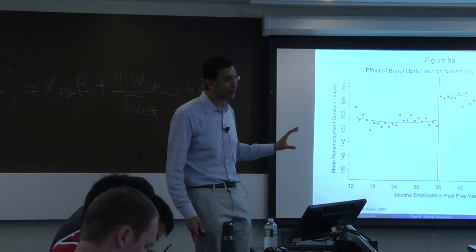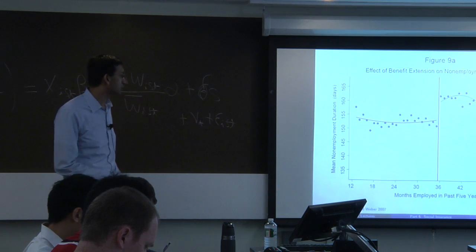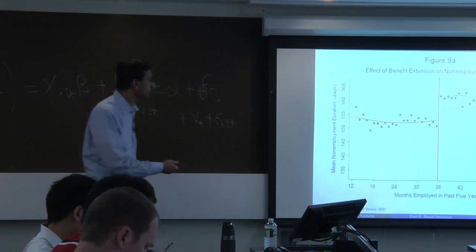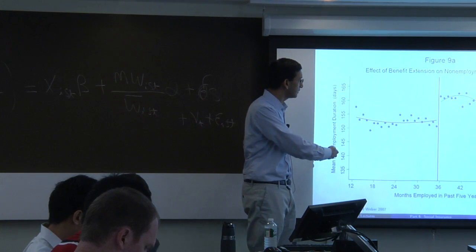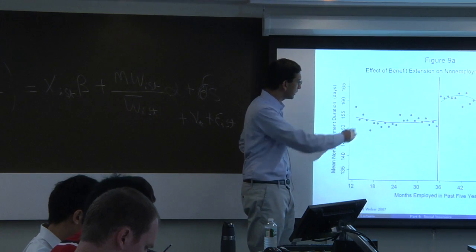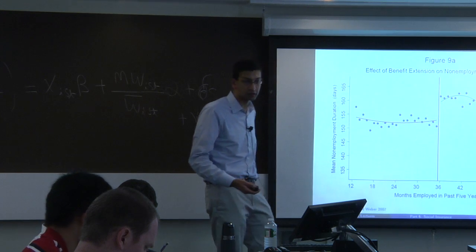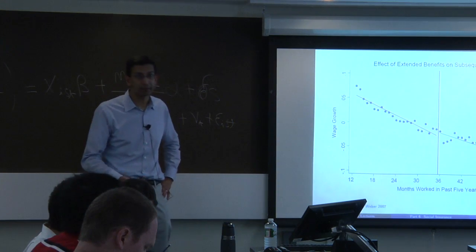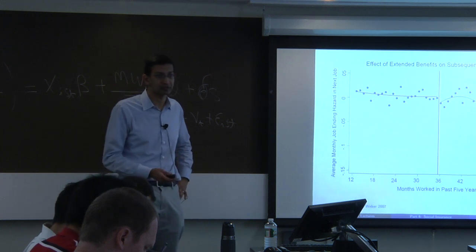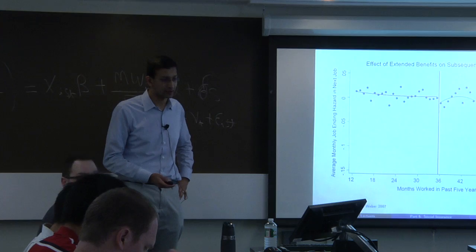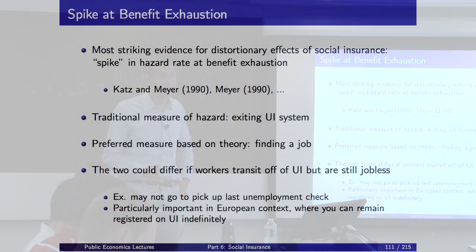Taking all of that into account, the substantive point of this graph is that when you extend unemployment benefits, despite various trends, you do see that people take longer to find jobs, but you don't see impacts on match quality—which is what we discussed at the end of the last lecture.